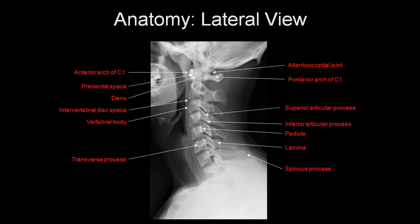On the lateral view, some things to be aware of are the anterior arch of the C1 vertebral body, the pre-dental space — the space between the anterior arch of C1 and the dens — the intervertebral disc spaces, the vertebral bodies themselves, the transverse processes, the spinous processes, the lamina, the pedicles, the inferior and superior articular processes, the atlanto-occipital joint, and the posterior arch of C1. Remember that when counting vertebral bodies, the first fully formed vertebral body you see is C2, not C1.